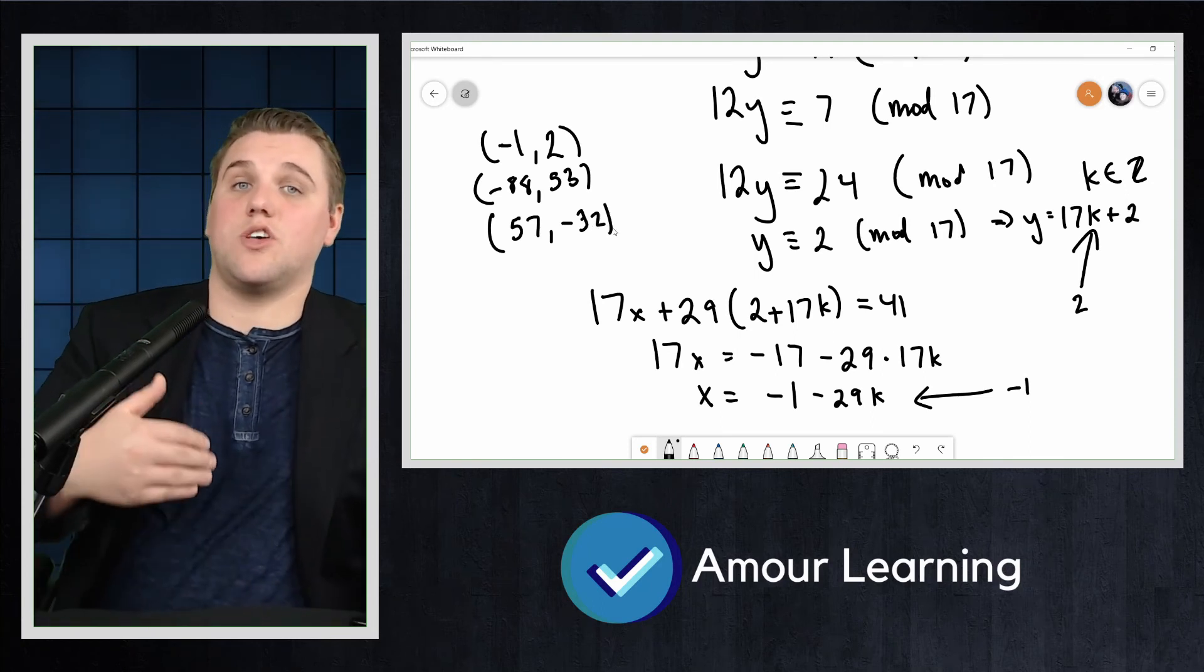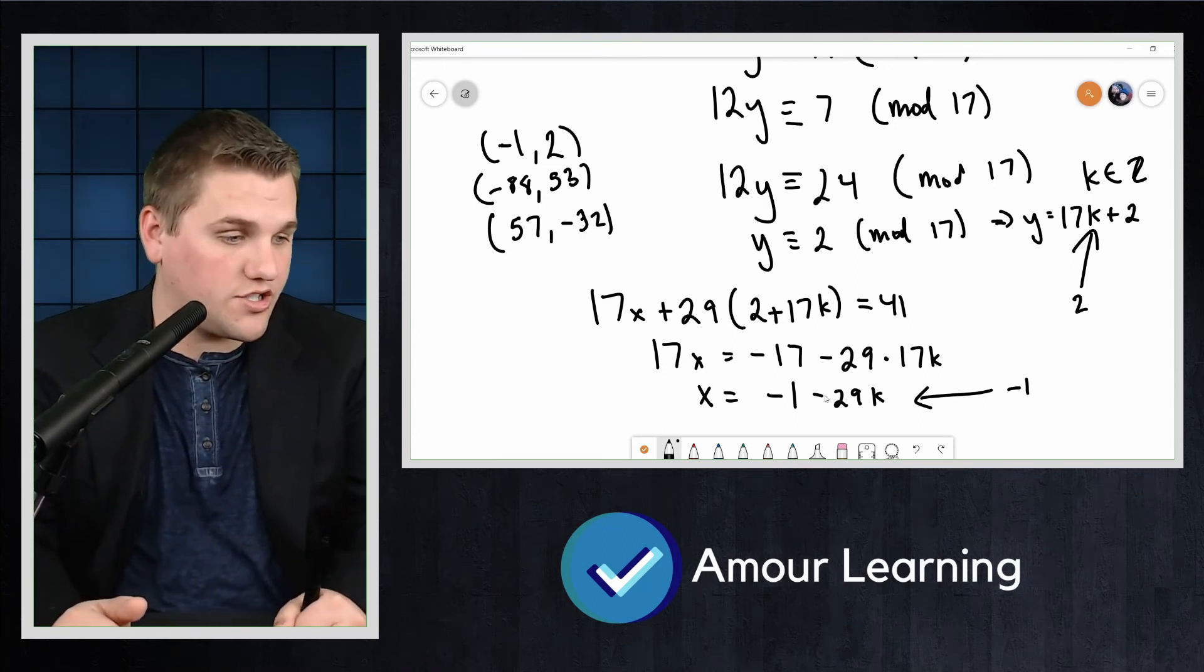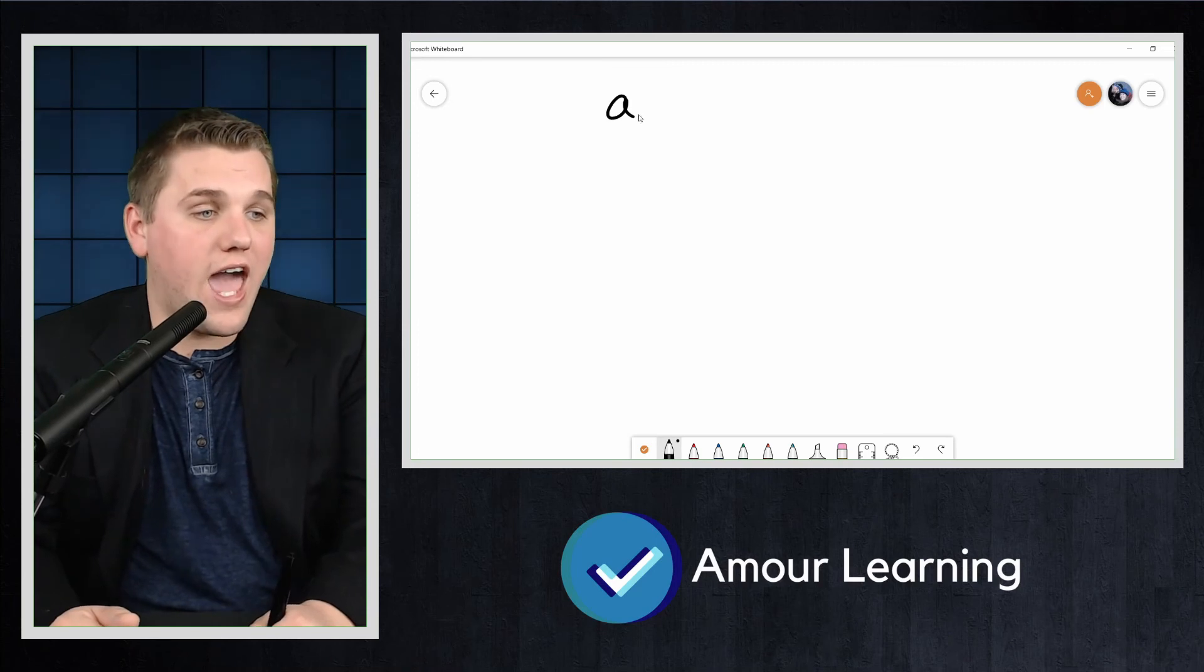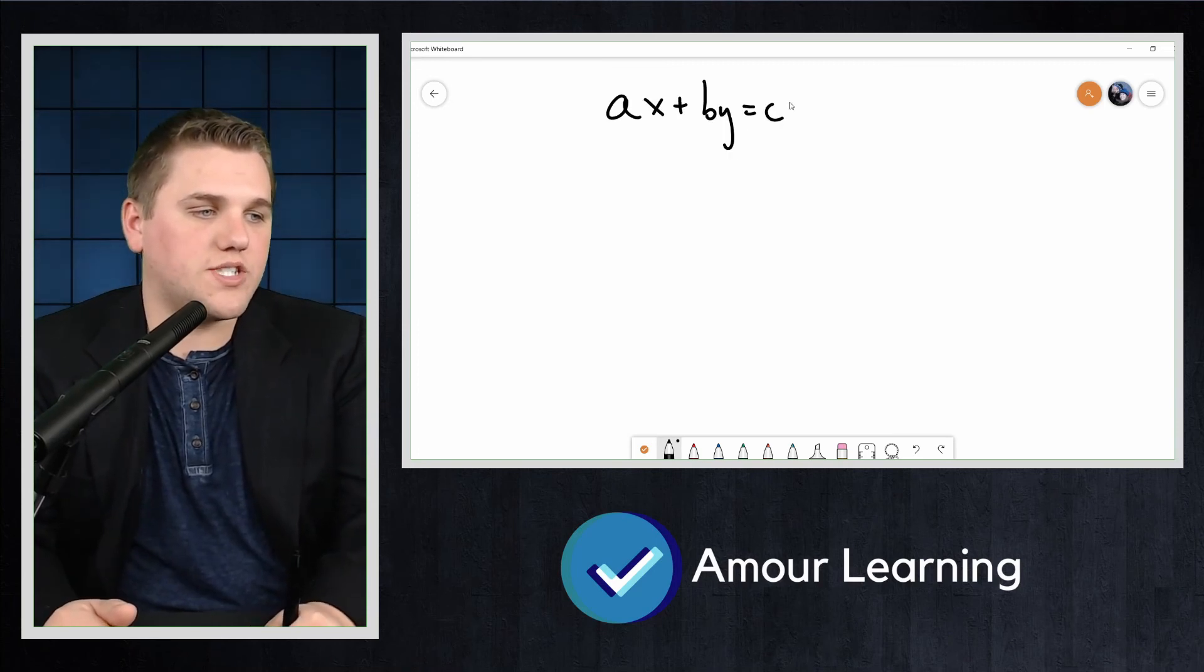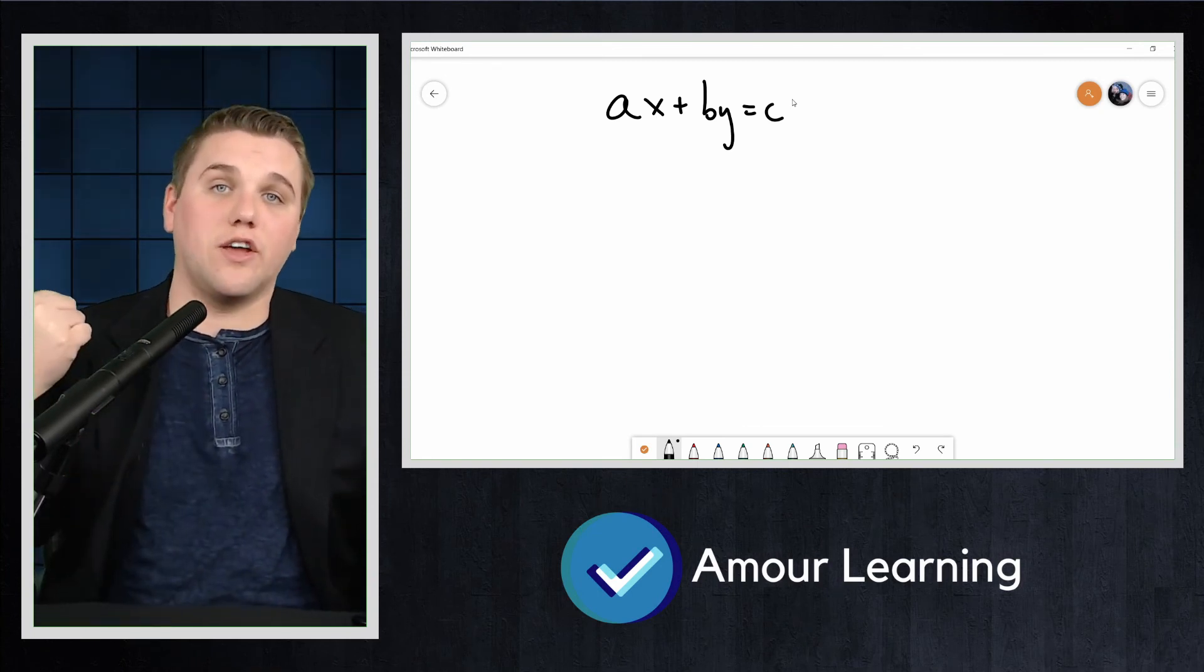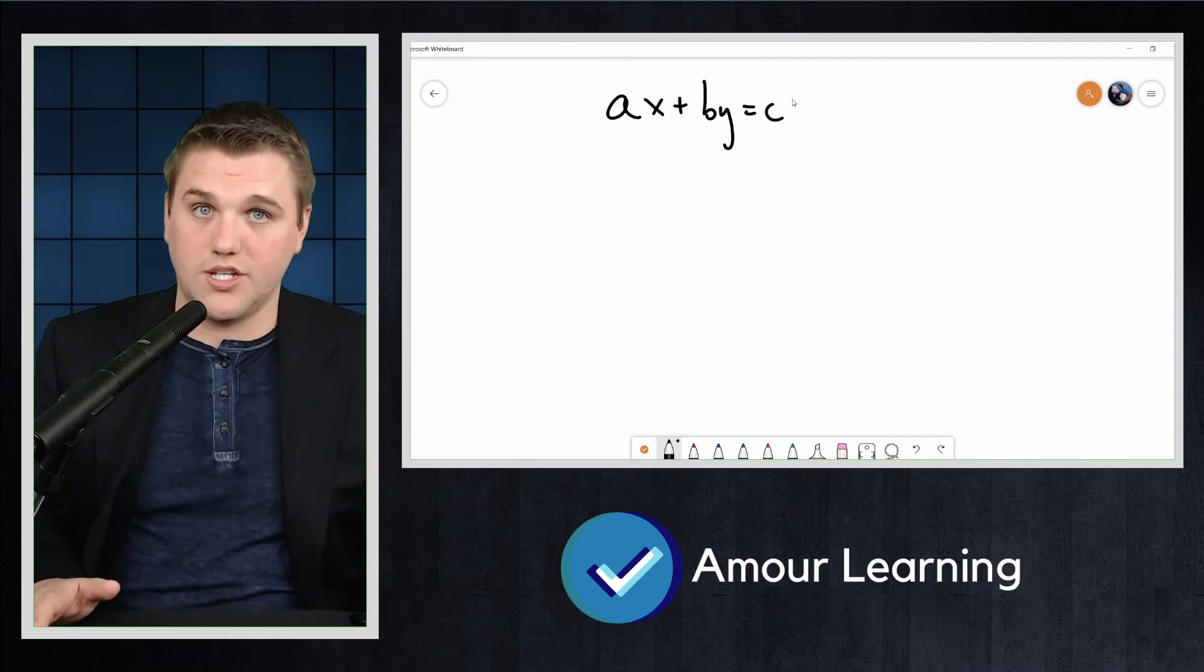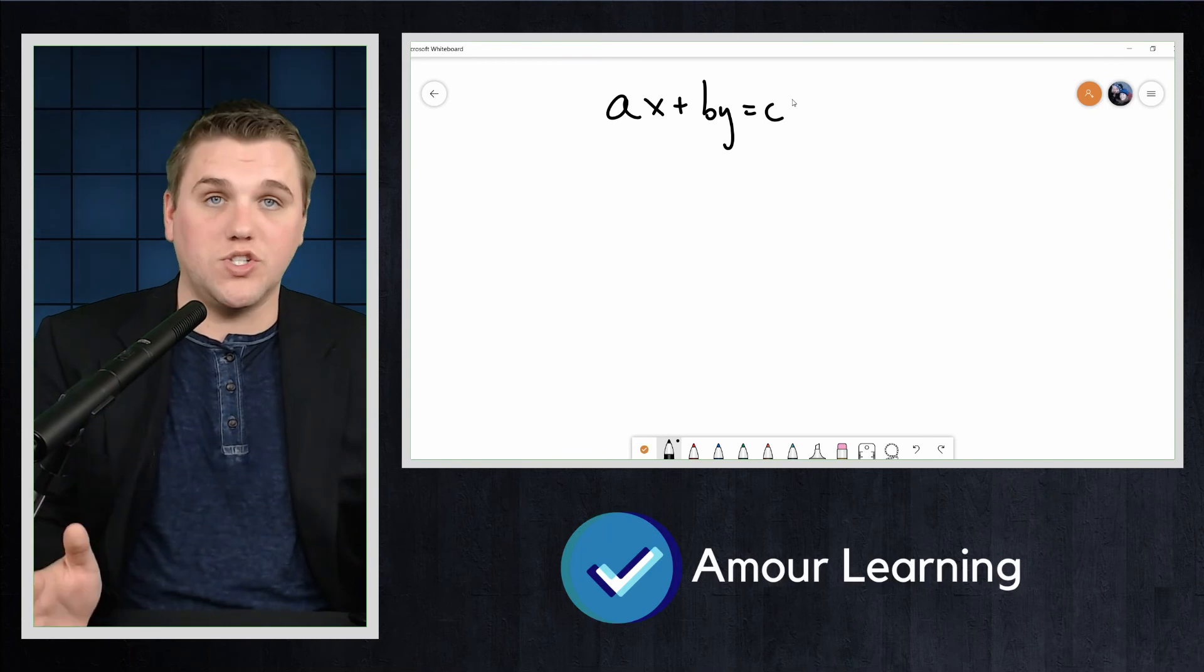To summarize this process to solve ax + by = c: first, we divide both sides of the equation by the GCD of a and b. If this does not leave the right hand side as an integer, there are no solutions. Let's assume that ax + by = c has already been reduced in this way.